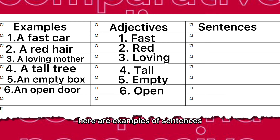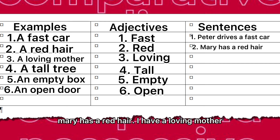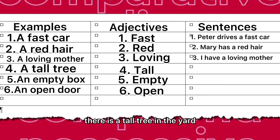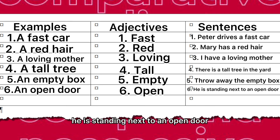Here are examples of sentences that have adjectives. Peter drives a fast car. Mary has red hair. I have a loving mother. There is a tall tree in the yard. Throw away the empty box. He is standing next to an open door.